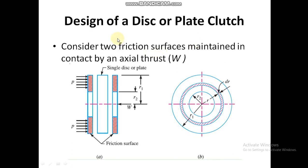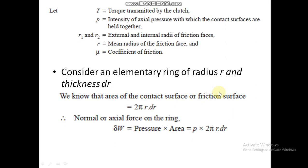Now we will discuss the design of disc or plate clutch. Consider two friction surfaces maintained in contact by an axial thrust W. The outside radius is R1 and inside radius is R2. Pressure applied is p. We assume a strip or ring of radius r and thickness dr. Let torque T be transmitted by the clutch; p is the pressure, R1 the outside radius, R2 the inside radius, r the mean radius, and mu is the coefficient of friction.